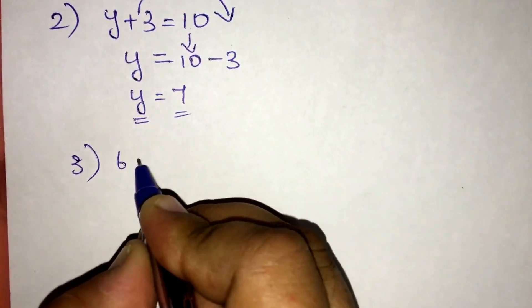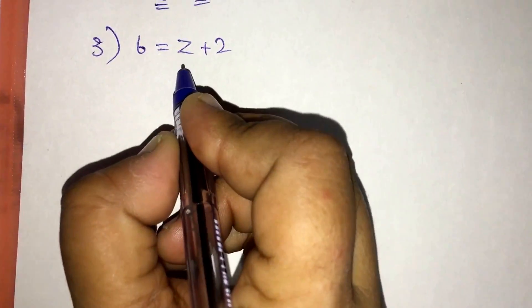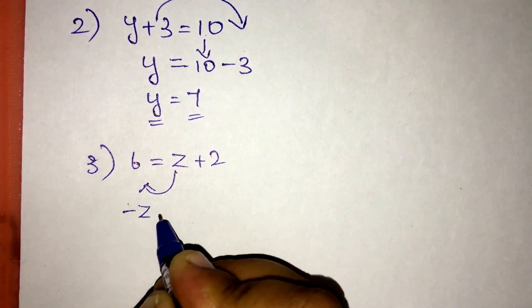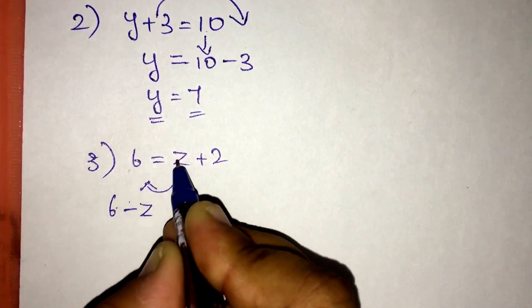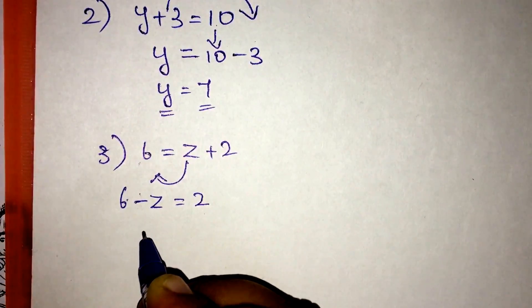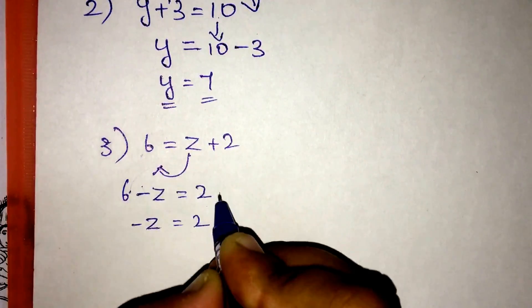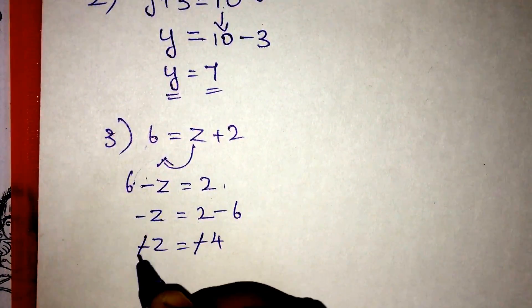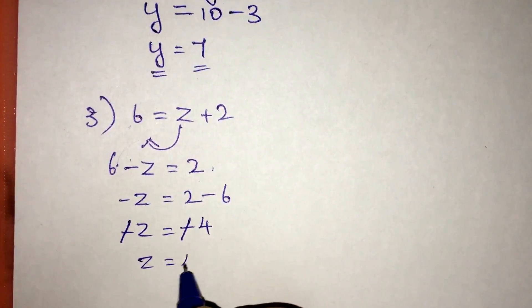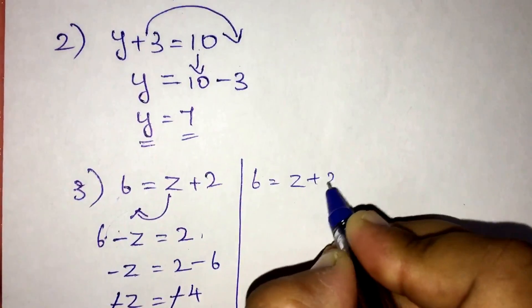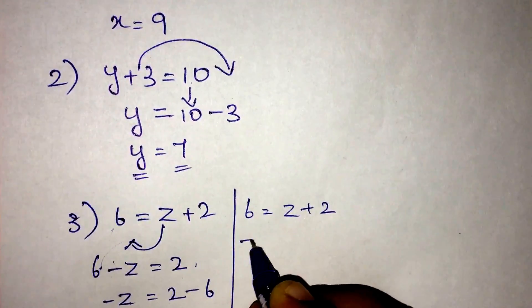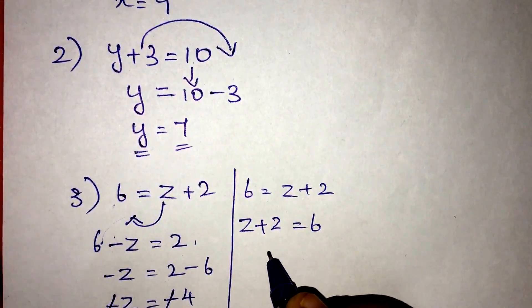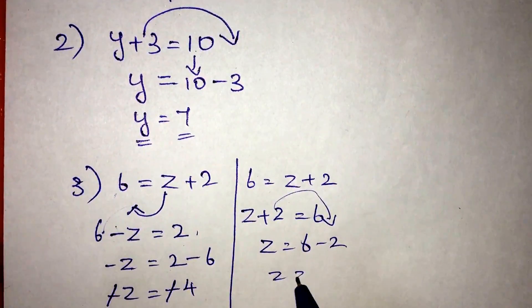Question number 3: 6 is equal to z plus 2. The variable is on the right side, so bring it to the left side, giving 6 minus z equals 2. Therefore, minus z equals 2 minus 6, which is minus 4, so z equals 4. Alternatively, rewriting as z plus 2 equals 6, z will be 6 minus 2, which is 4.